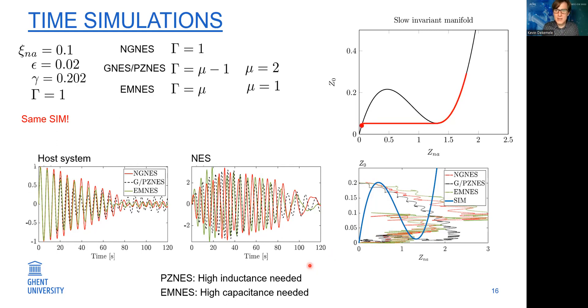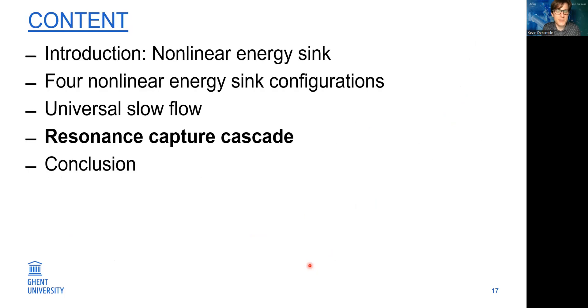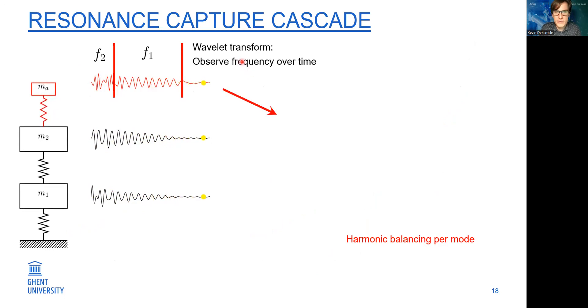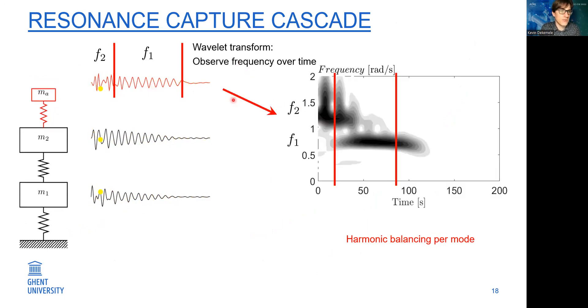Then the resonance capture cascade. I have shown you this animation before. What you can see is first the NES vibrates with the higher frequency and then with a lower frequency. If we do a wavelet transform of these vibrations, this is what we see: these are the frequencies over time.